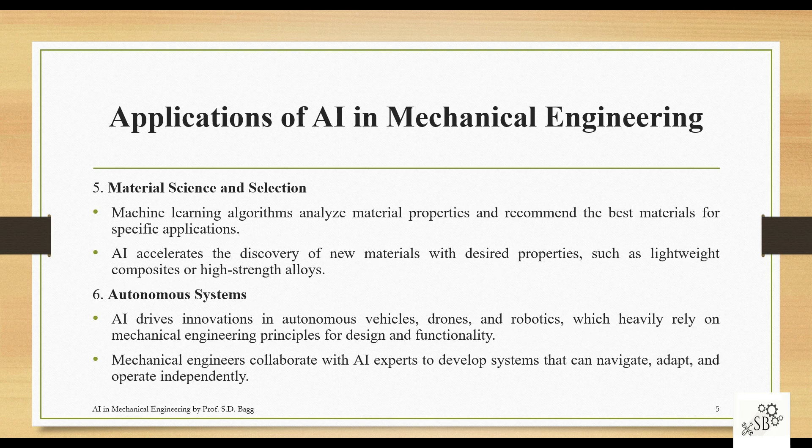The next application is material science and selection. Machine learning algorithms analyze material properties and recommend the best materials for specific applications. AI accelerates the discovery of new materials with desired properties such as lightweight composites or high-strength alloys. Based on your optimized design, AI will suggest the best material — whether lightweight, high-strength composites or alloys — and these materials can now be discovered faster.